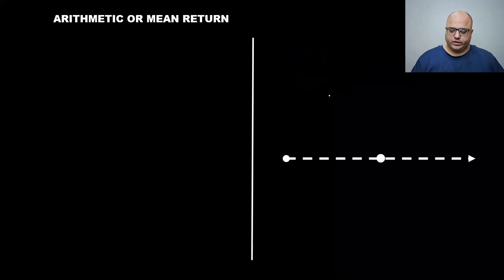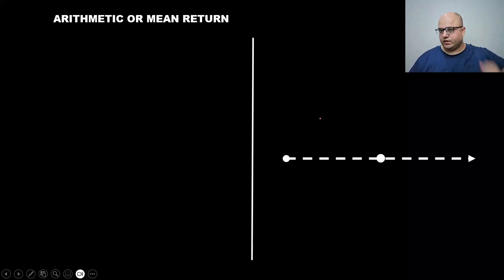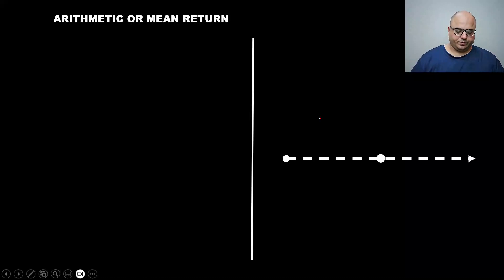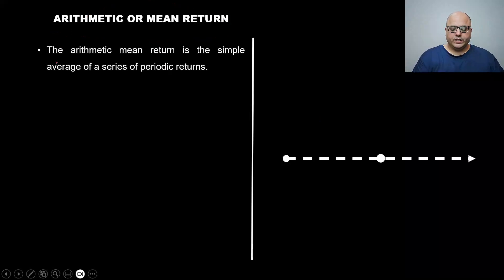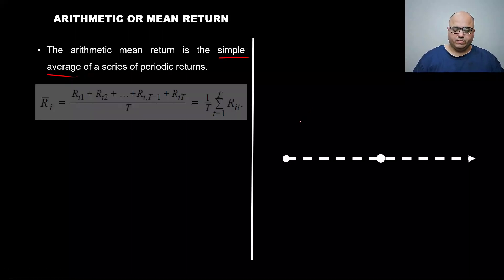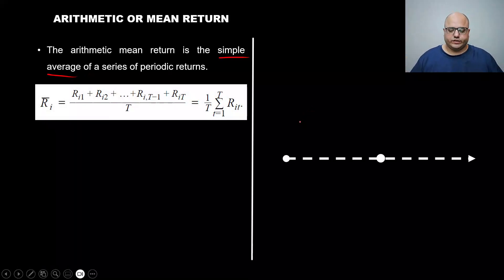In this video, we'll look at arithmetic mean or arithmetic mean return, how to calculate it, in what situations you can use arithmetic mean, and what its assumptions are. The arithmetic mean return is the simple average of a series of periodic returns. This R-bar with a dash represents arithmetic mean return.